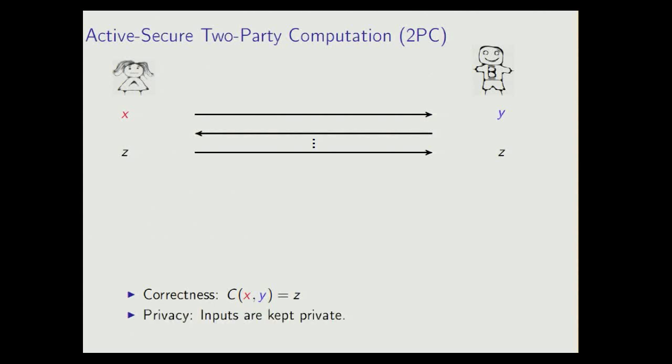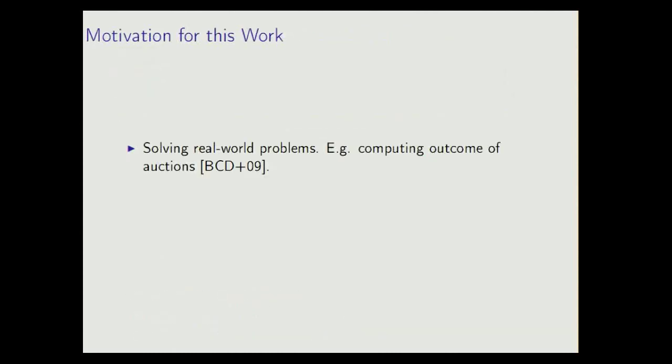Second, we also want some kind of privacy so that the private inputs are kept private even after the protocol is run. When we talk of active security, we say that this should hold even if we have an adversary that can corrupt one of these parties and deviate from the protocol in any arbitrary way. For this work in particular, we also care about a somewhat more vague property. We want the protocol to be practical, and what this means is basically we want it to run in some reasonable amount of time for reasonable sizes of circuits.